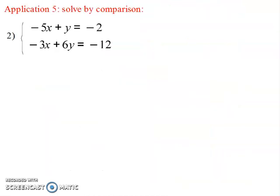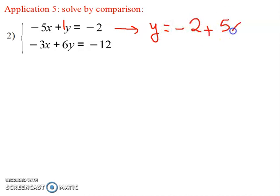Second example — also solved by comparison. Again, we can isolate x from both equations and set x equal x, or isolate y and set y equal y. The easiest approach is always when the coefficient is one. Here y has coefficient one in the first equation, so we isolate y: y equal minus two plus five x.